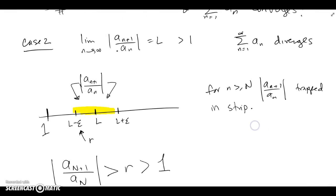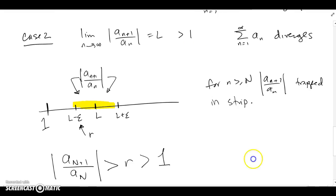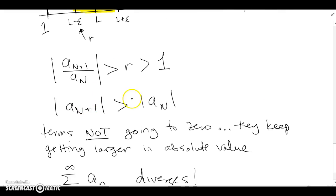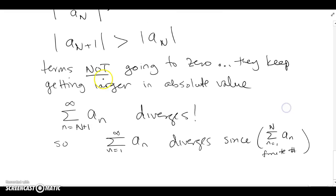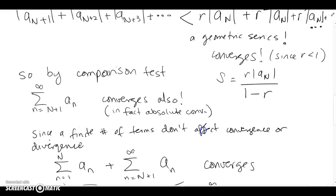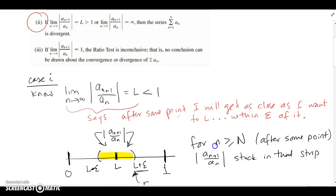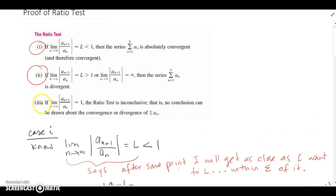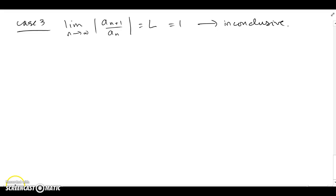To recap case two: we started with the limit of the ratio being bigger than 1. That led us to see that each successive term is bigger than the previous one, the terms don't go to zero, and the whole thing diverges. Now let's quickly look at the last case — the inconclusive case. If the limit goes to 1, then you can't really use the ratio test.